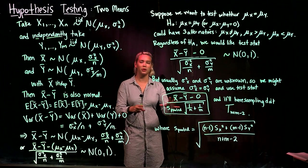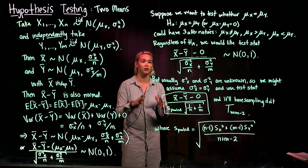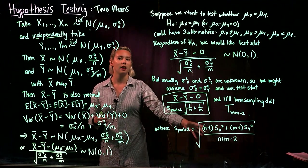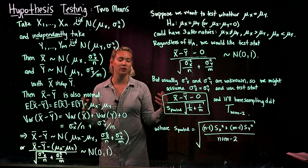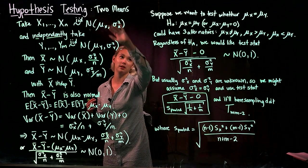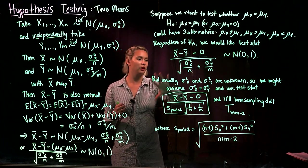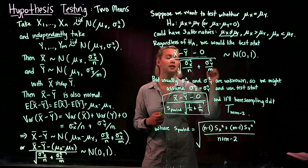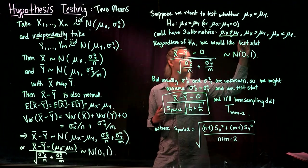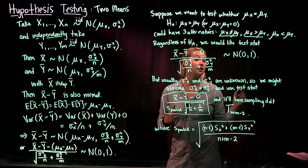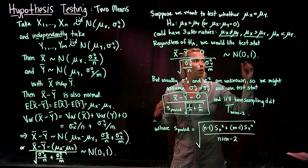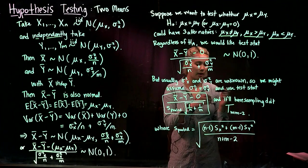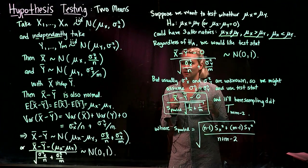So this is what we're going to use. We assume the variances are unknown and calculate the pooled variance. The whole idea is to test whether two means are equal, and all of these calculations apply whether our alternative hypothesis is that the two means are not equal, that mu x is greater than mu y, or that mu x is less than mu y.